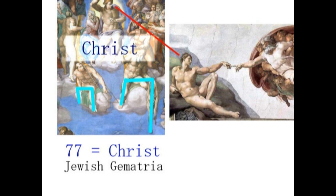ミケランジェロという操り人形芸術家を通して、ここに描かれているのはイエス・キリストであるということを示しました。それが私たち人間に対するメッセージということになります。そして、それと同じ顔の人物を、天井画のアダムの創造の絵の中に描きました。この二人の人物の顔は同じです。イコール、左がキリストですから、右もキリストということになります。アダムなんかでは、ありません。